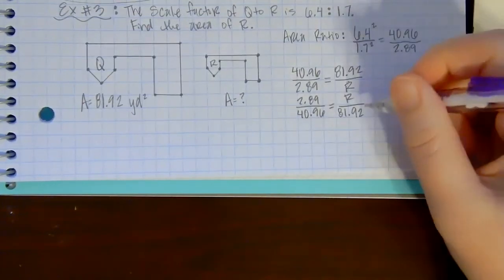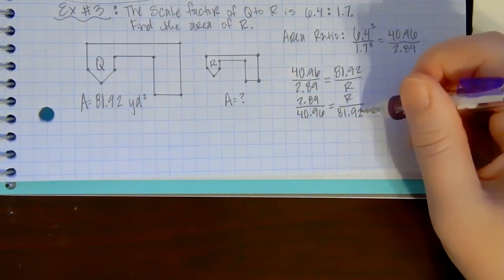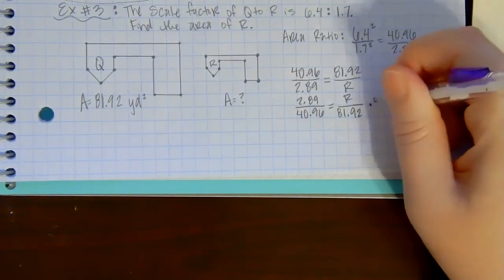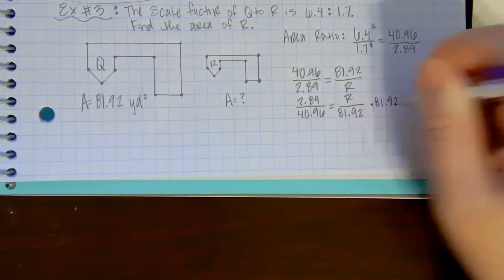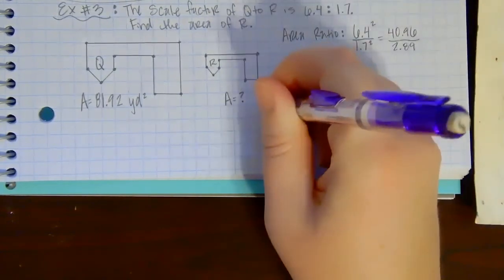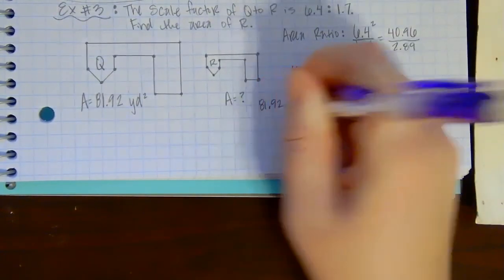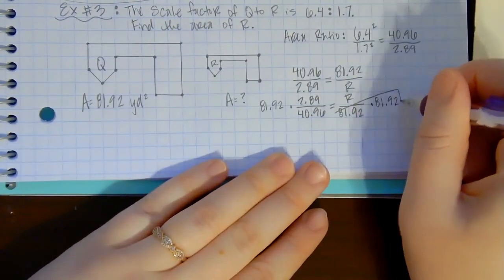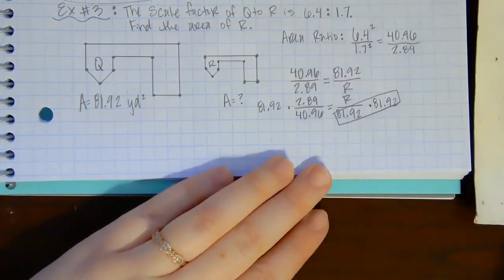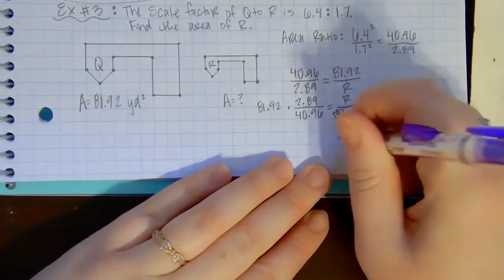So now I can solve like I did on the last one. To get rid of dividing by 81.92, I can multiply by 81.92 to both sides. And then here, 81.92 divided by 81.92 is just one, so I can bring down the R.